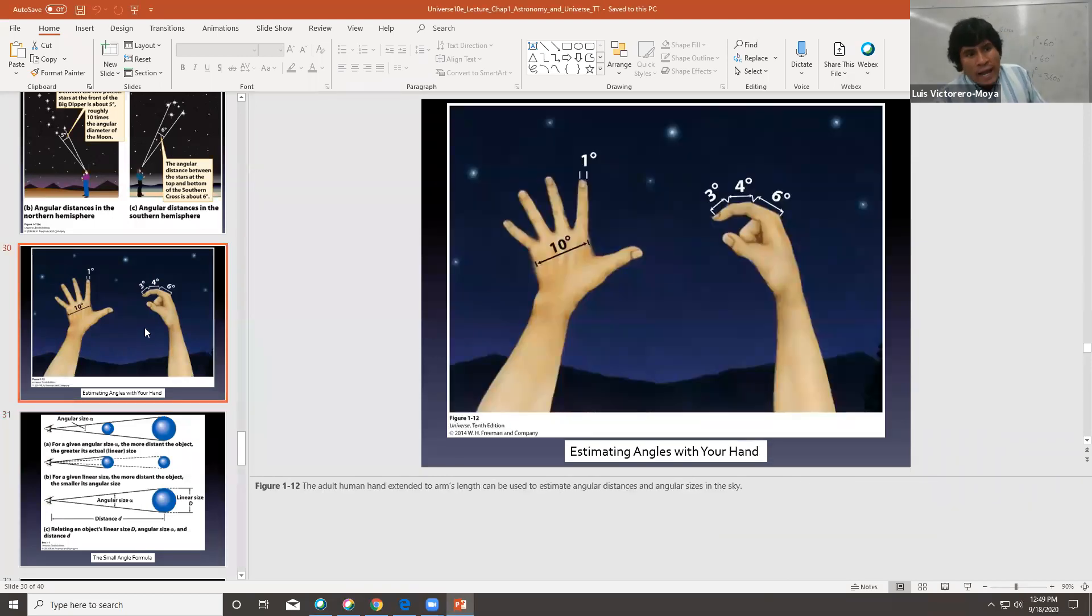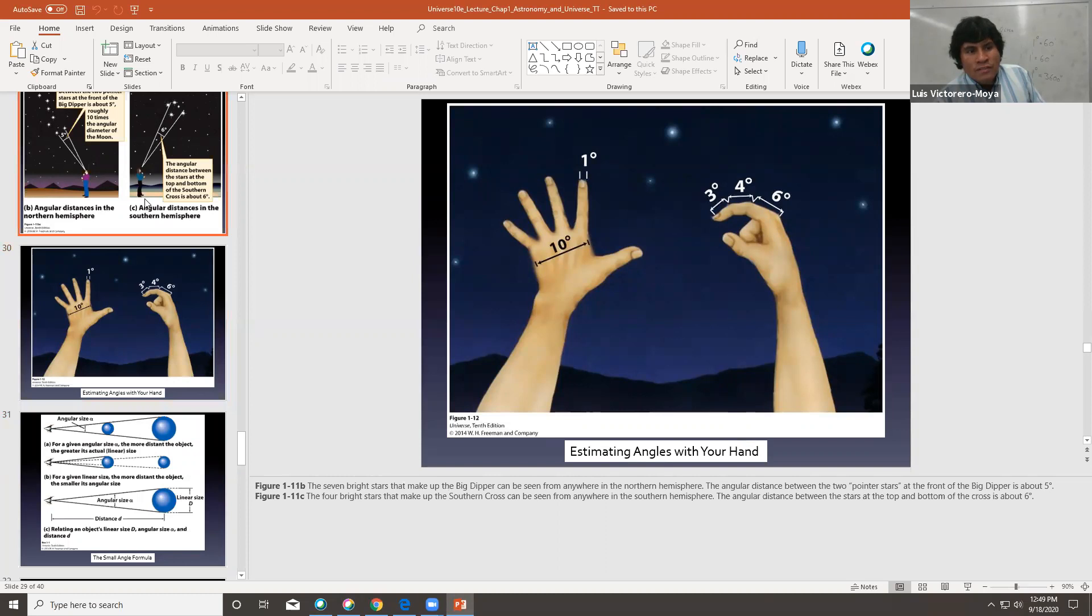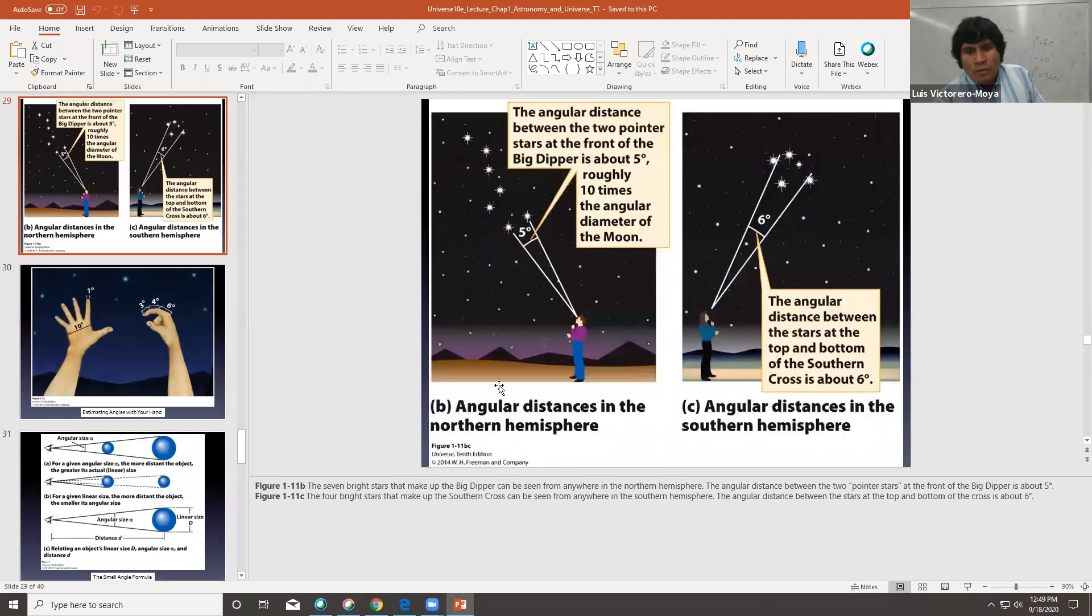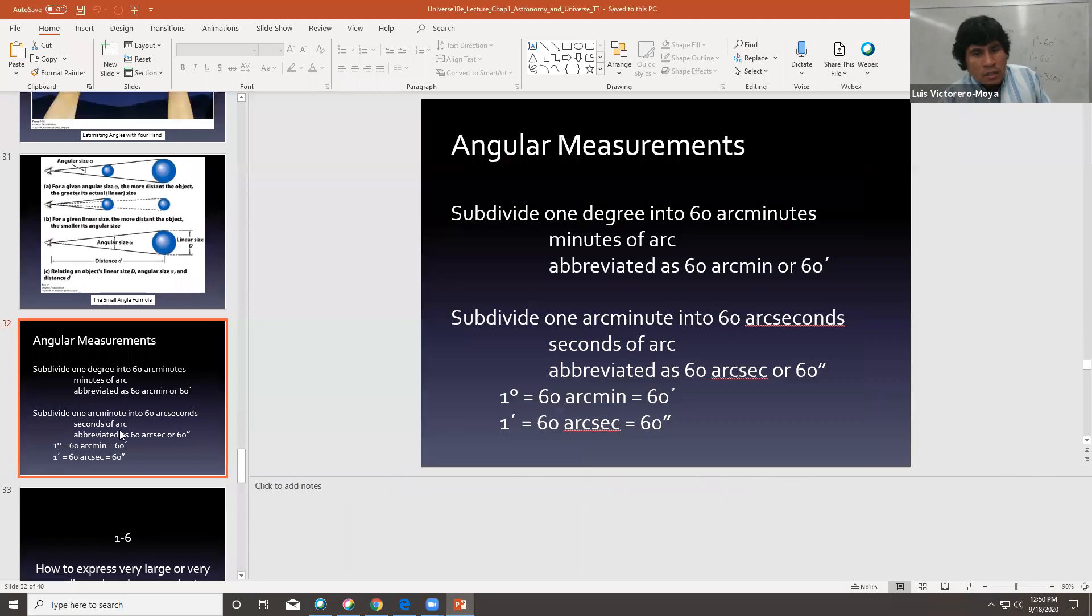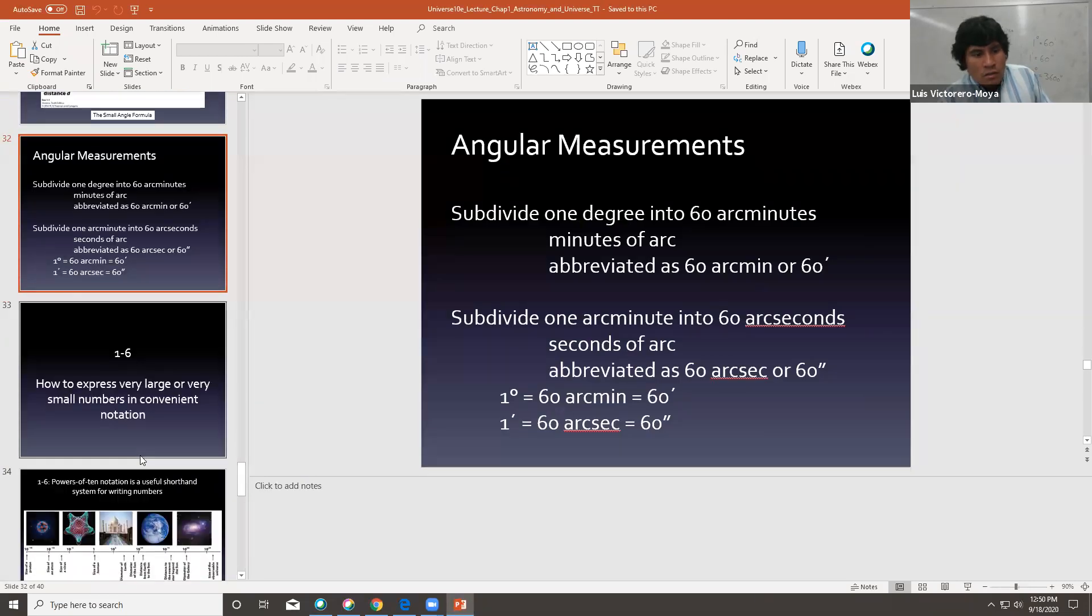So, this is small angle approximation. That's how we measure with our hand. We can actually estimate distances. It can be in the northern hemisphere, with the little dipper, or in the southern hemisphere, with the southern cross. You guys use the northern, the little dipper and Polaris to know where the north is. In the south, we use Alpha Centauri and the southern cross to locate the south celestial point.